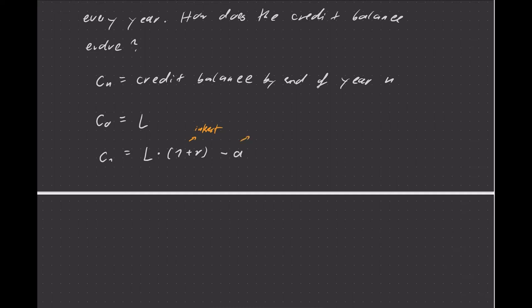And then you pay the annuity, so we deduct this annuity payment A. So that's the credit balance by the end of the first year and that is of course equal to C_0 times (1+R) minus A.